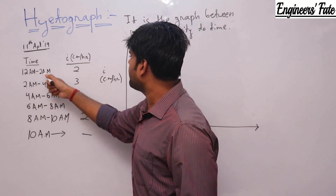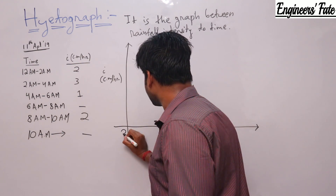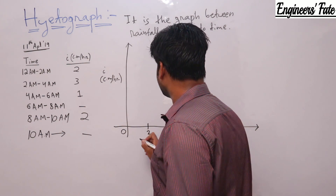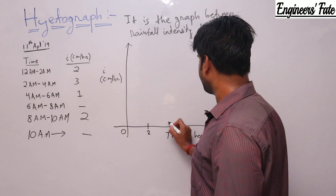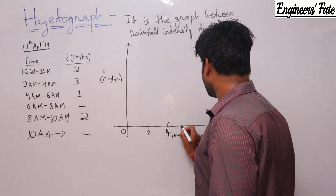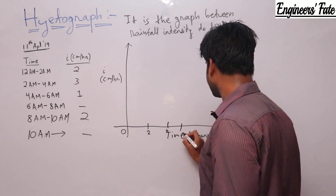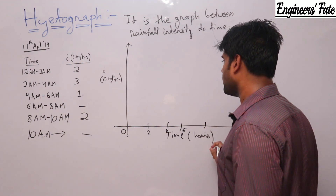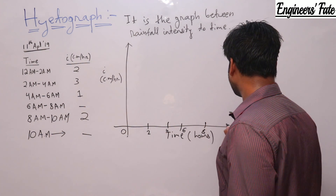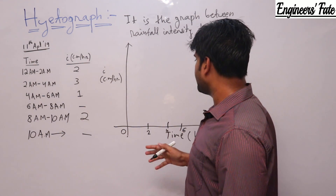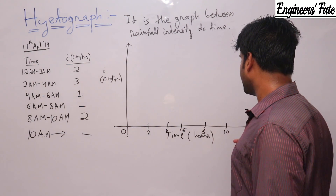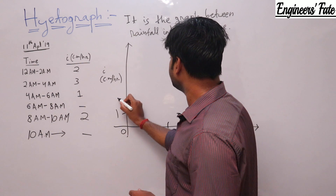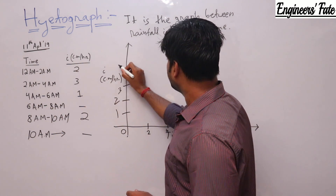Starting from 12 am (marked as 0), each interval is 2 hours: 12 am to 2 am, 2 am to 4 am, 4 am to 6 am, 6 am to 8 am, and 8 am to 10 am. I mark intensity values 1, 2, 3, 4, 5 on the y-axis.